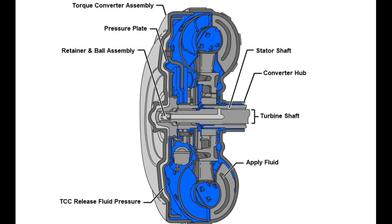When the pressure plate assembly is applied, the amount of slippage that occurs through the fluid coupling is reduced but not eliminated. This results in a more efficient transfer of torque to the drive wheels. To reduce torsional shock during the apply of the pressure plate to the converter cover, a spring-loaded damper assembly is used.